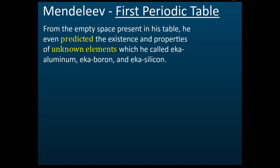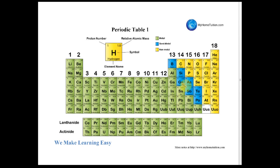Mendeleev used the periodic table to predict the existence and properties of unknown elements — elements that hadn't been found yet. For example, at the time, germanium, gallium, and strontium had not been discovered. Mendeleev used his periodic table to predict the properties of these elements, even though he didn't know their names yet.